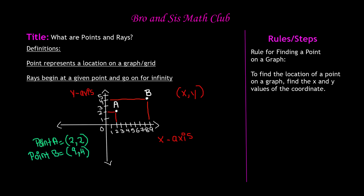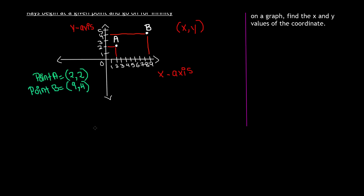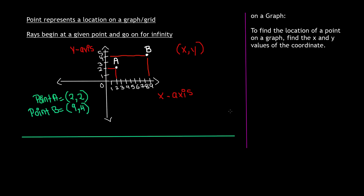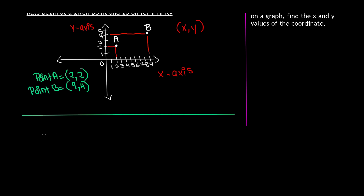That's all for what are points. Now let's go ahead and learn a little bit about rays. So what is the definition of a ray? Rays begin at a given point and go on for infinity. So rays are going to begin at a given point — let's say the given point is called point A — and then this ray is going to go on for infinity.